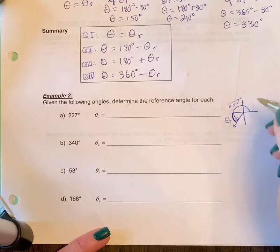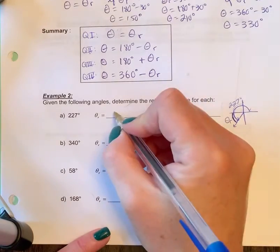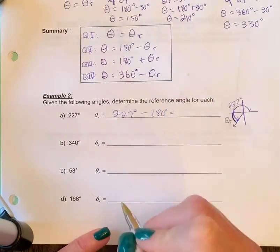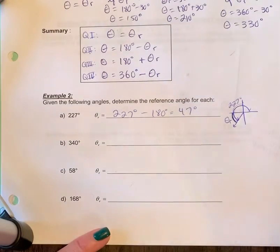That's what theta r is. To figure out this distance, I would take 227 minus 180. So 227 degrees minus 180 degrees gives me 47 degrees.